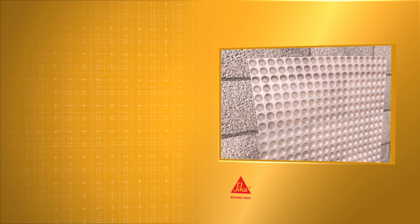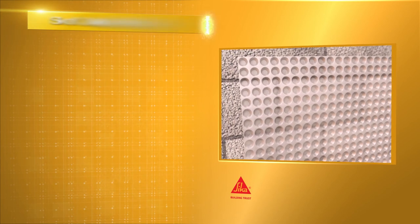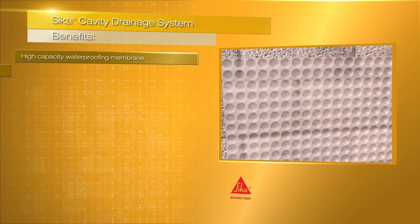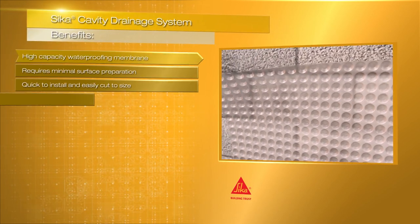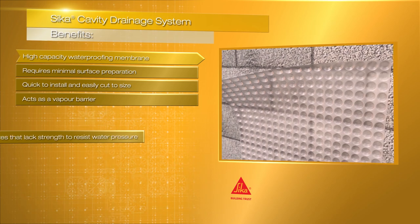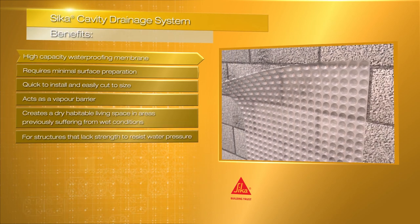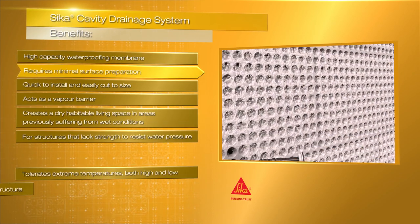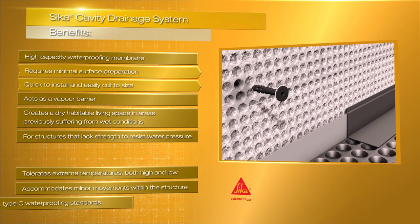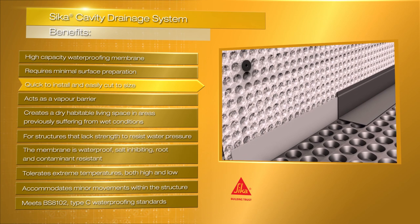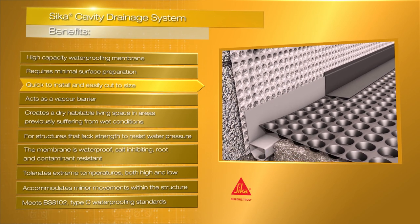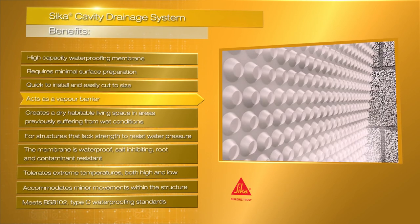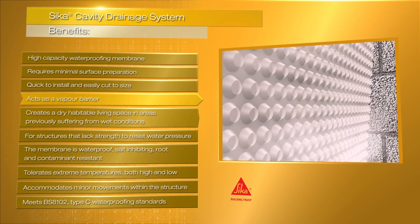There is a lot of benefit from the Seeker Cavity Drainage System as it has a high-capacity waterproofing membrane. It requires minimal surface preparation, is quick to install and easily cut to size, and acts as a vapour barrier.